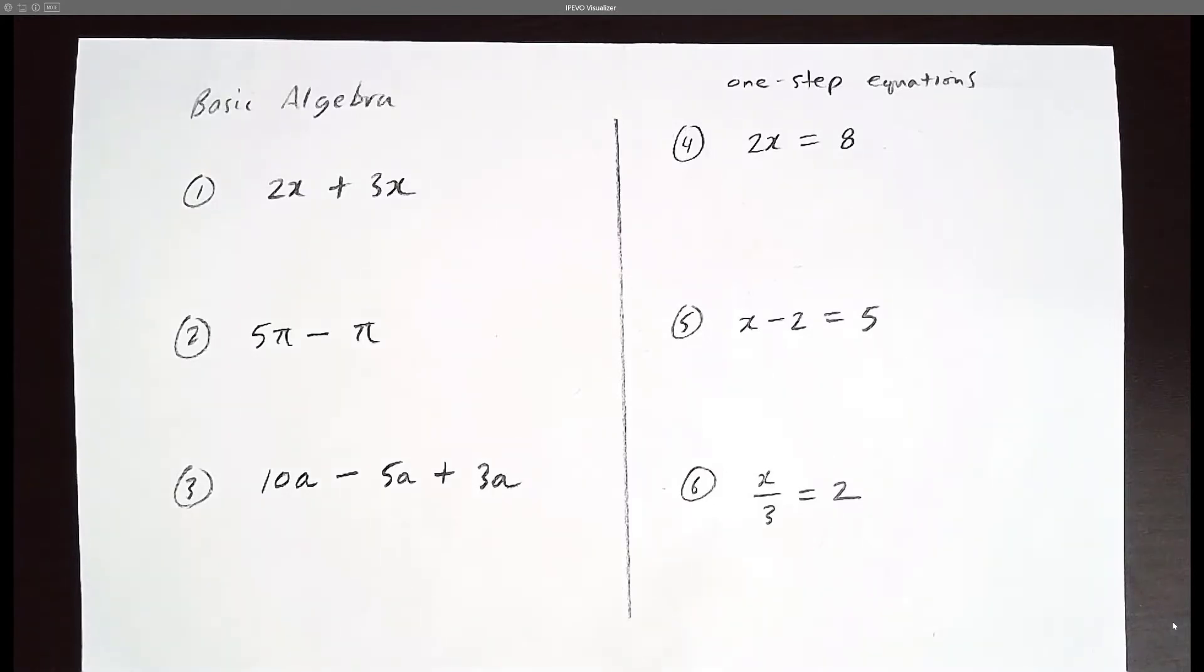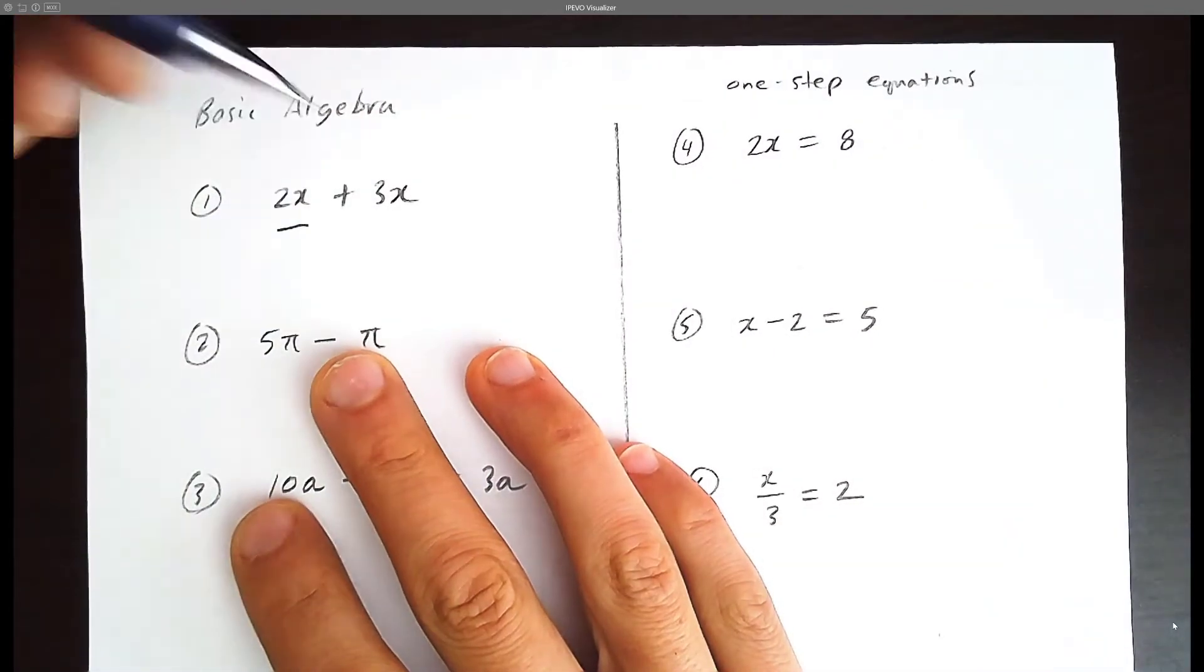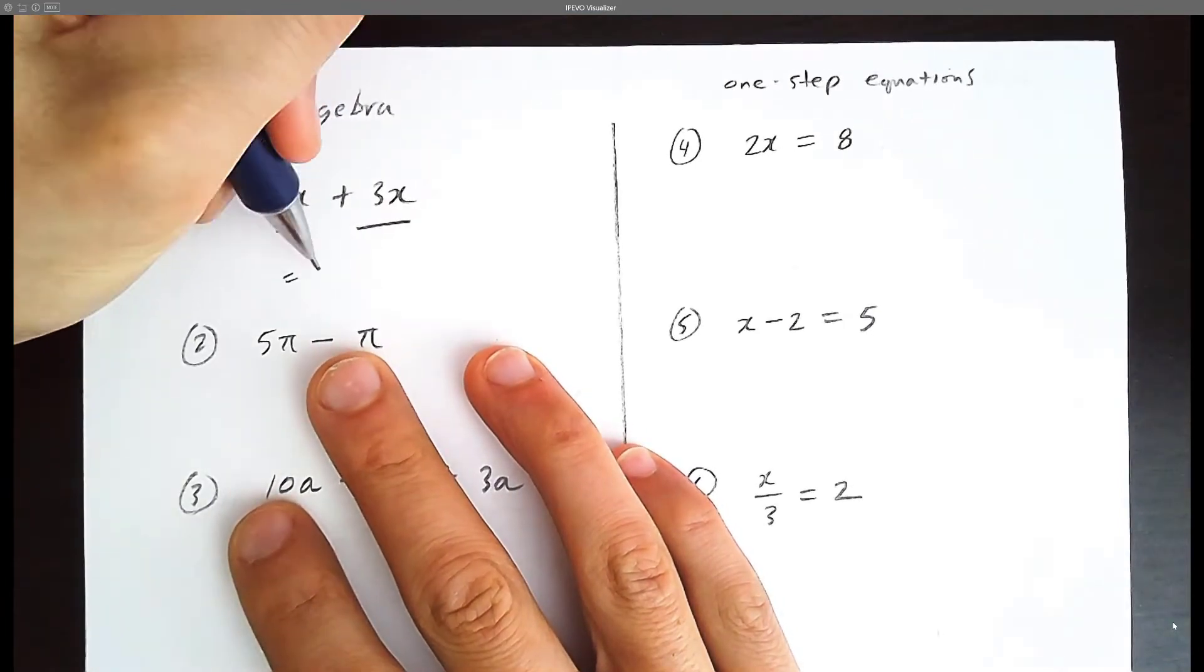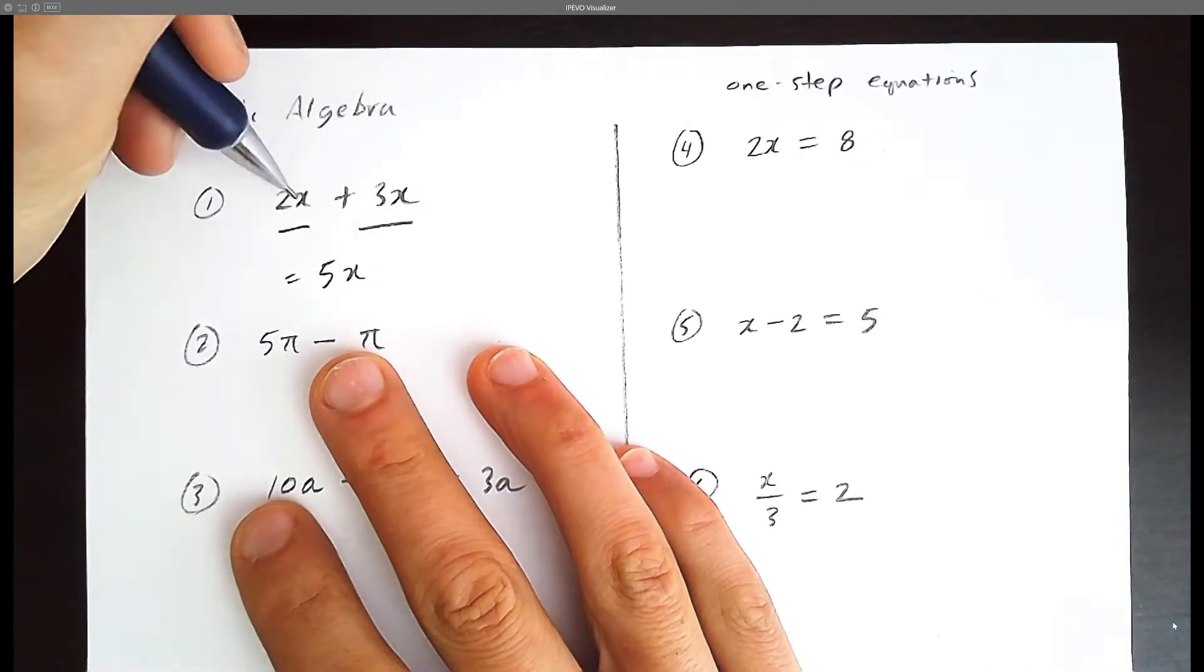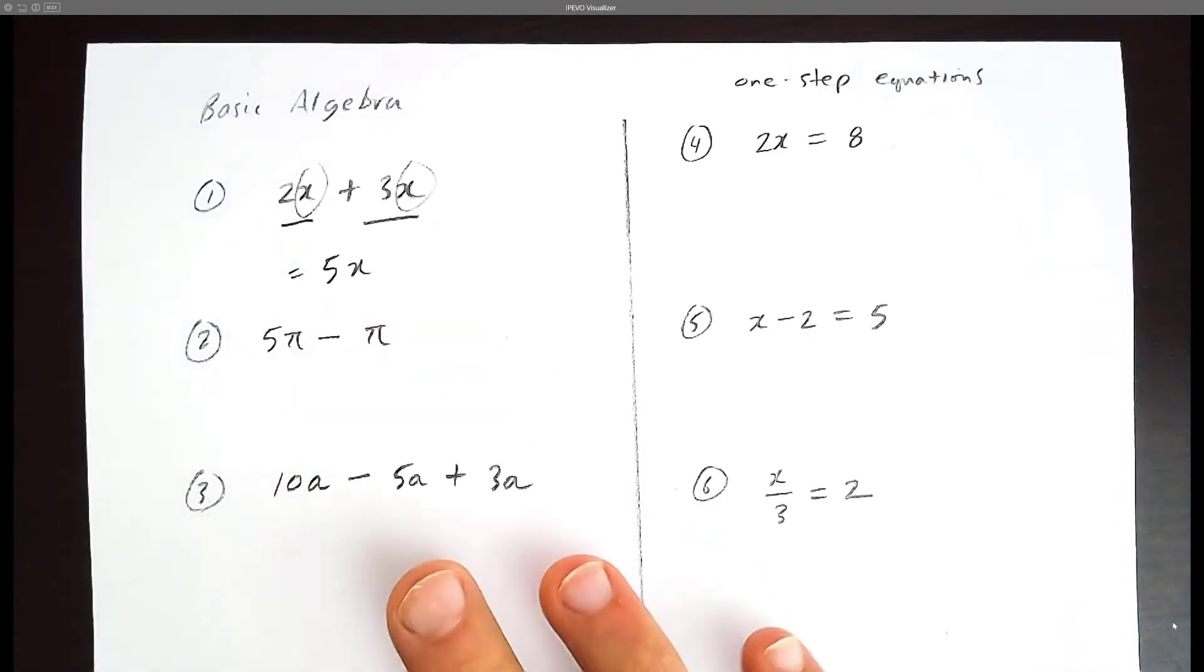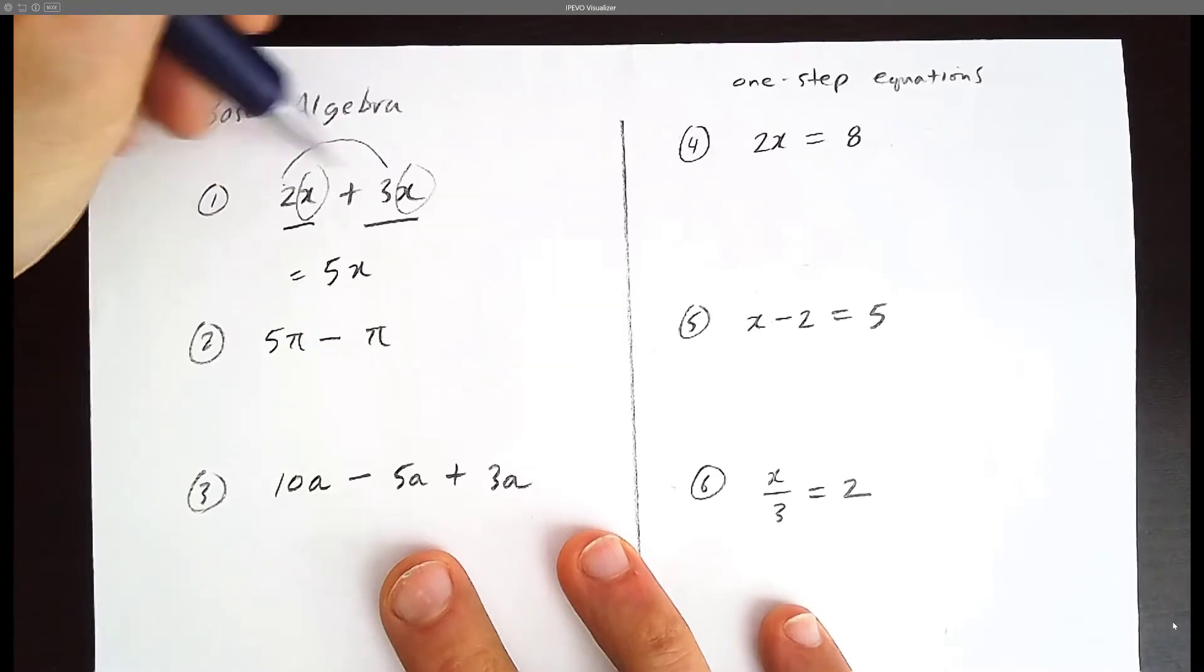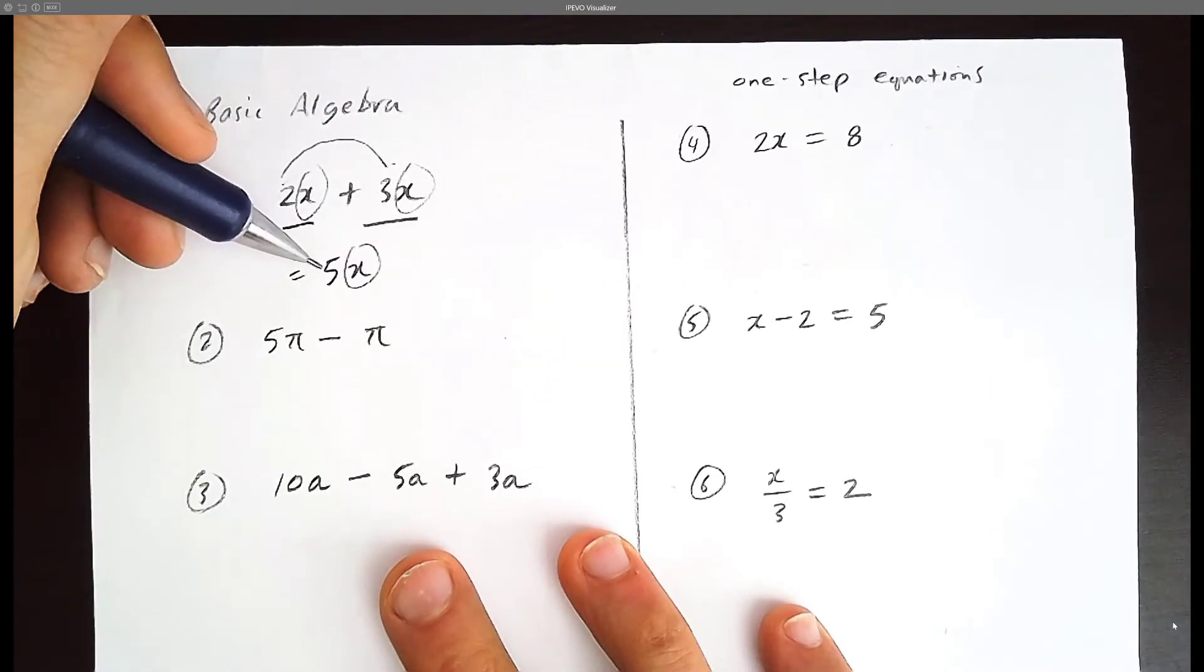Let's practice some basic algebra, including one-step equations. You have two x-ray machines and you add three x-ray machines. How many x-ray machines do you have in total? You have five x-ray machines. So whenever you have a variable, whether it be x, y, z, or a, b, c, whatever variable you have, you simply add the coefficients. Two plus three is five, and we're talking about x-ray machines, so the answer is 5x.